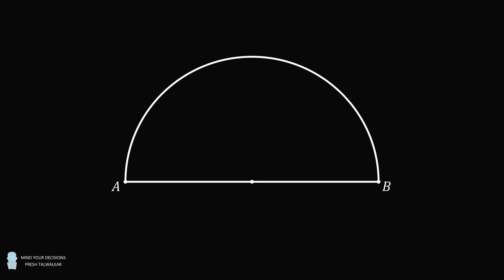We have a semicircle with the diameter AB. Pick a point C on the arc and construct the triangle ACB. Inscribe a circle inside of ACB. Let D, E, and F be the points of tangency and construct a triangle. The question is, what is the measure of angle EDF?